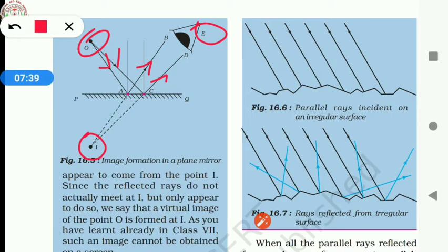Here, the image of the object O is forming at I, not by the actual intersection of the reflected rays. So, a virtual image is forming at I, and this image cannot be obtained on a screen.